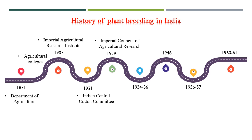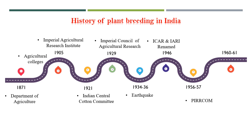The buildings of IARI were damaged by an earthquake in 1934, and the institute was therefore shifted to its present location in New Delhi in 1936. The name was changed to Indian Agricultural Research Institute (IARI) and Indian Council of Agricultural Research (ICAR) in 1946. In 1956, a project for intensification of regional research on cotton, oilseeds, and millets — PIRCOM — was initiated to intensify research on these crops.